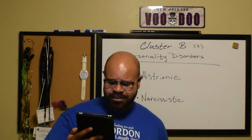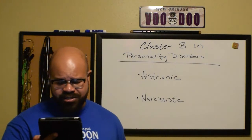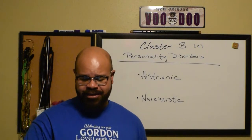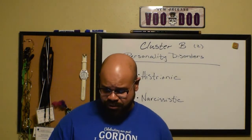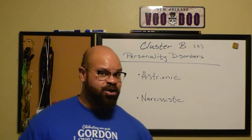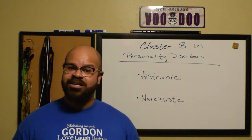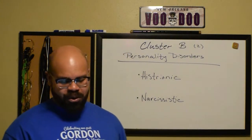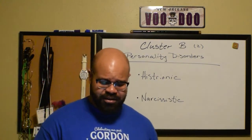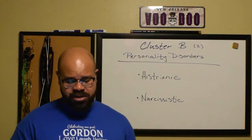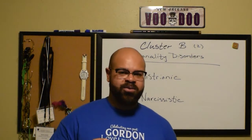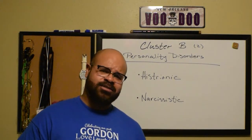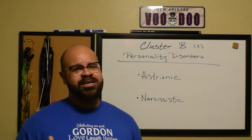Criterion five: has a sense of entitlement, that is, unreasonable expectations of especially favorable treatment or automatic compliance with their expectations — basically 'my way or the highway.' Criterion six: is interpersonally exploitative — takes advantage of others to achieve their own ends. This is where some people conflate narcissism and antisocial personality, but they are different.